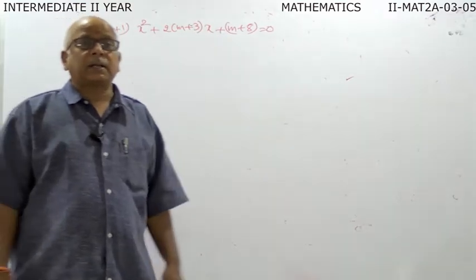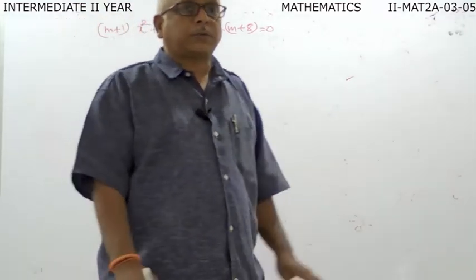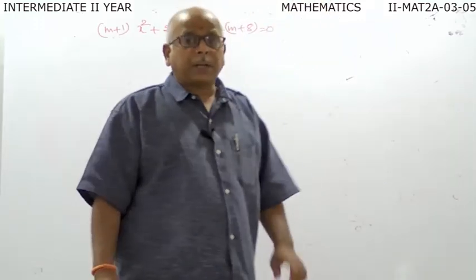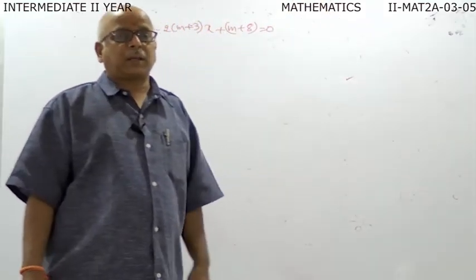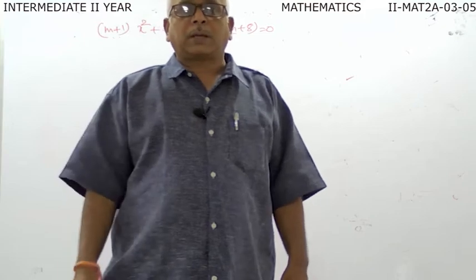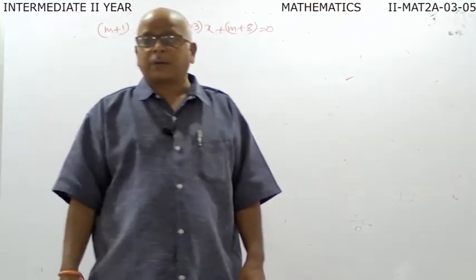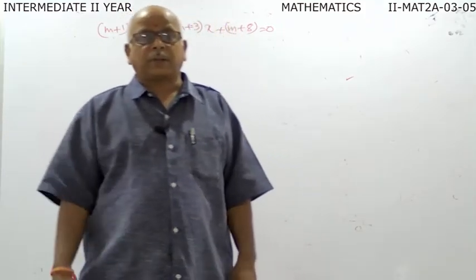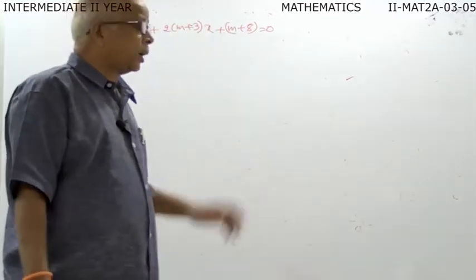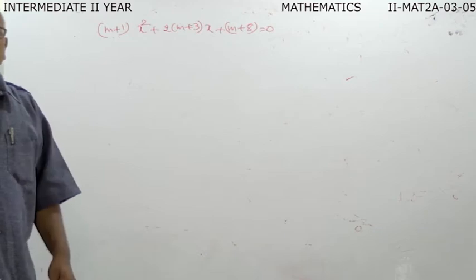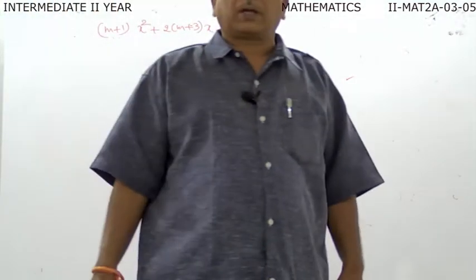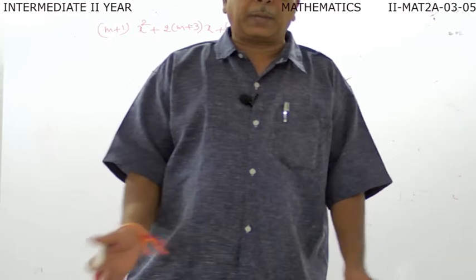We are using two terms: real and distinct, and real and equal. In this problem he is specifying that the equation has two equal roots, and he need not specify whether the roots are real or complex, because complex roots can never be equal roots.